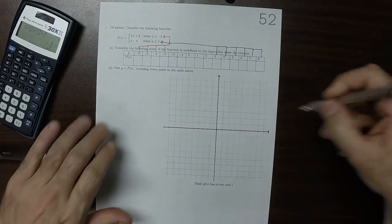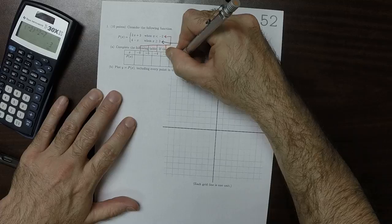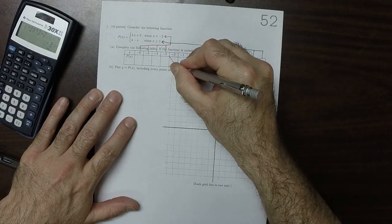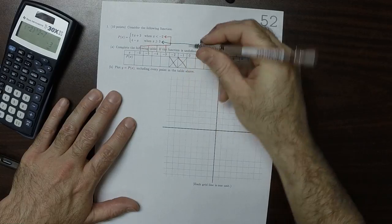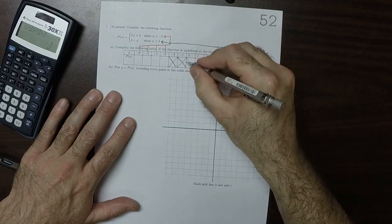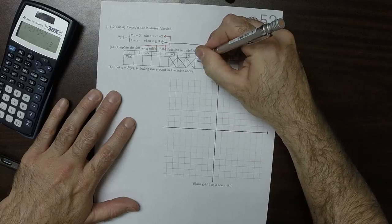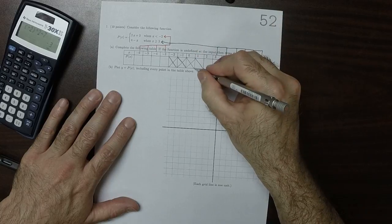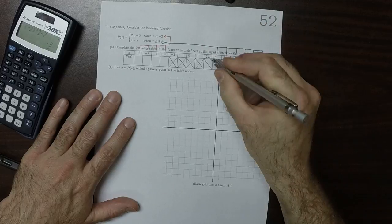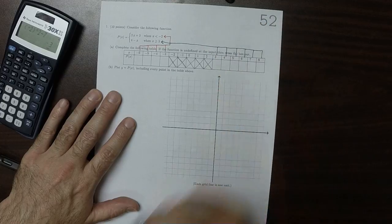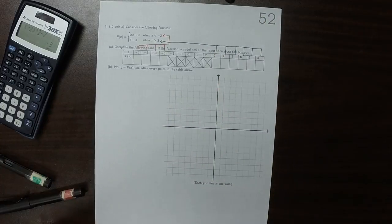So as a result, that one is not going to be defined, neither is that one, neither is that one, neither is that one, and neither is that one. So none of those are defined.